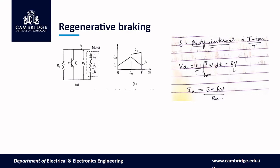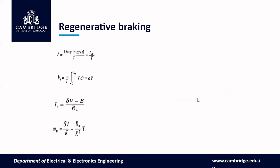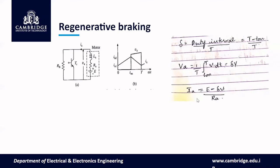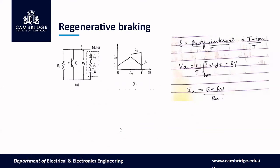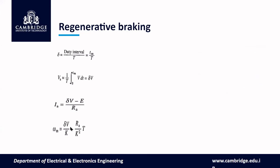For regenerative braking, Va = (1/T)∫(Ton to T) V·dt = δV. Then Ia = (E − δV)/Ra. Since Ia has reversed, T = −K·Ia, and ωM = δV/K − (Ra/K²)·T. This completes the regenerative braking operation derivation.